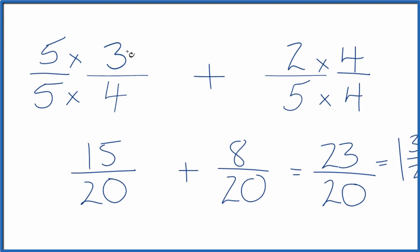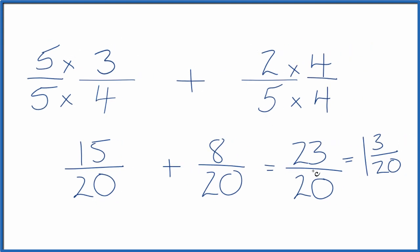But in answer to our question, when we add 3 fourths plus 2 fifths, we end up with 23 over 20 or 1 and 3 twentieths. This is Dr. B. Thanks for watching.